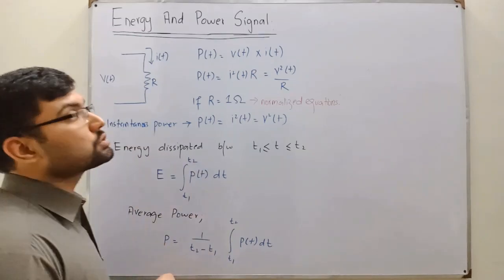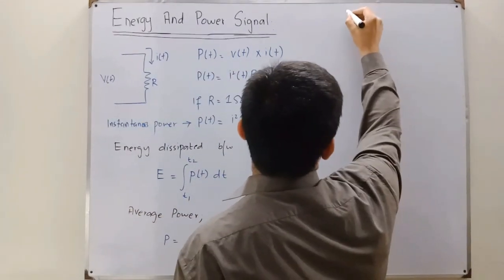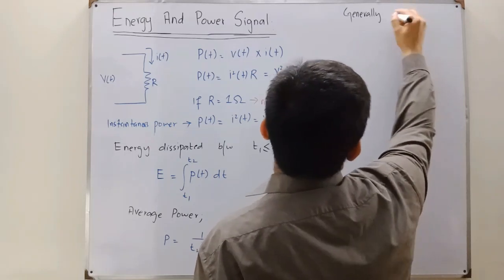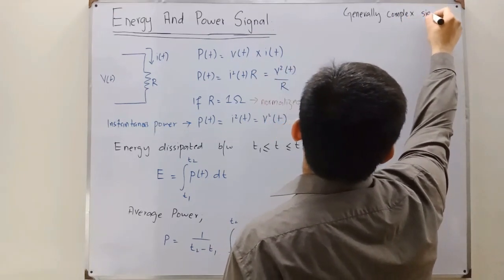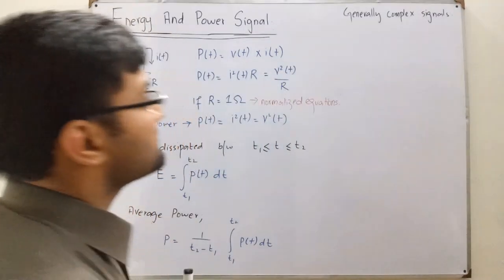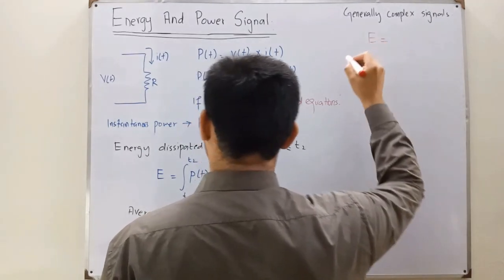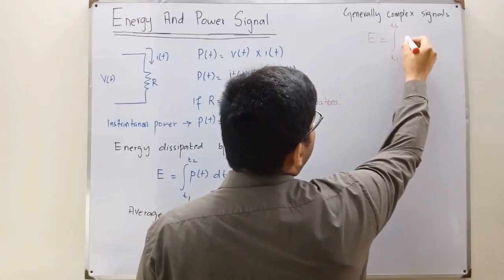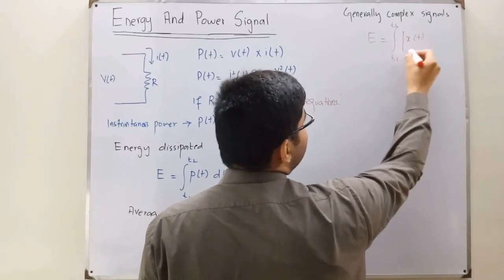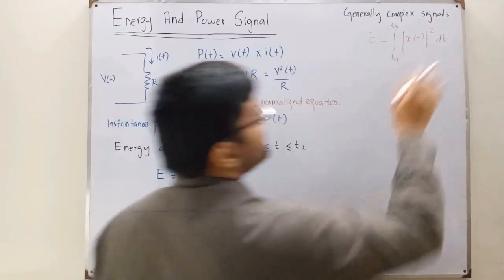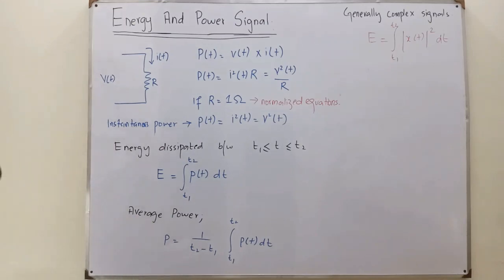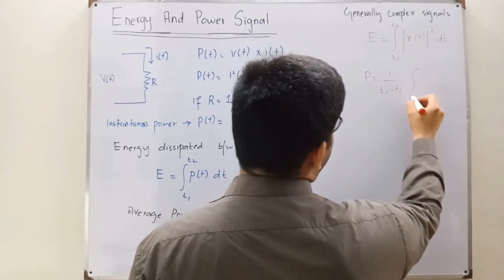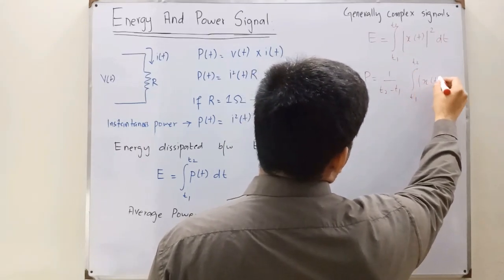The signals we see in this course will generally be complex numbers — complex signals. So to find the energy for such signals, the energy is the integral from t1 to t2 of |x(t)|² dt. Similarly, the average power of a signal is 1/(t2 − t1) times the integral from t1 to t2 of |x(t)|².